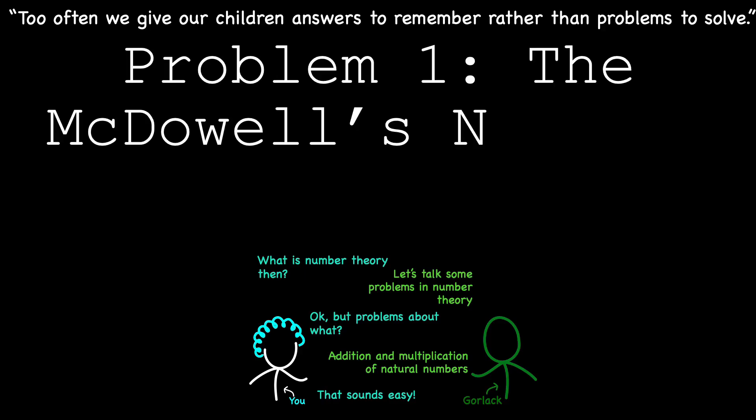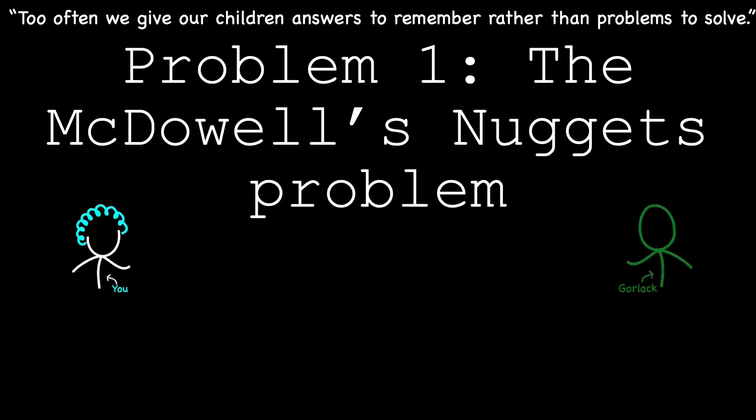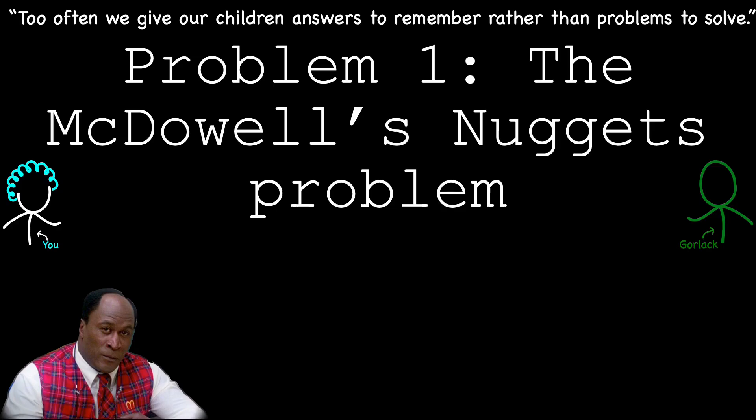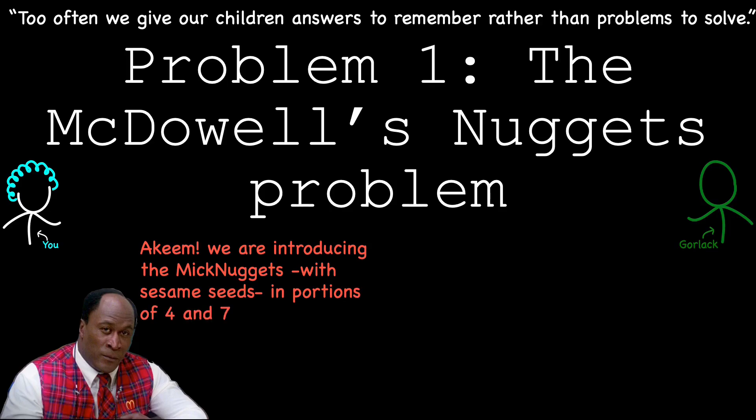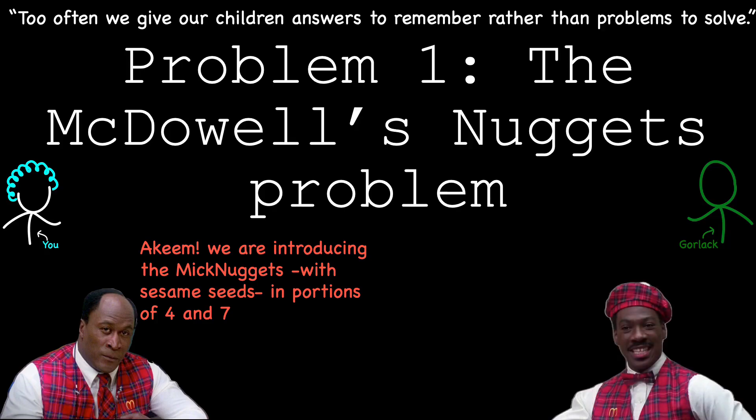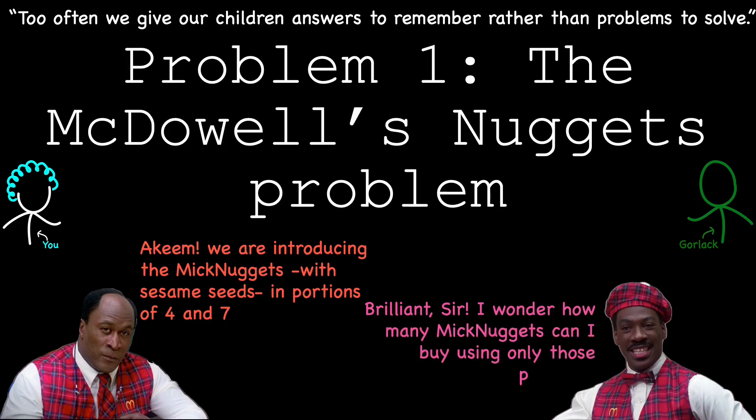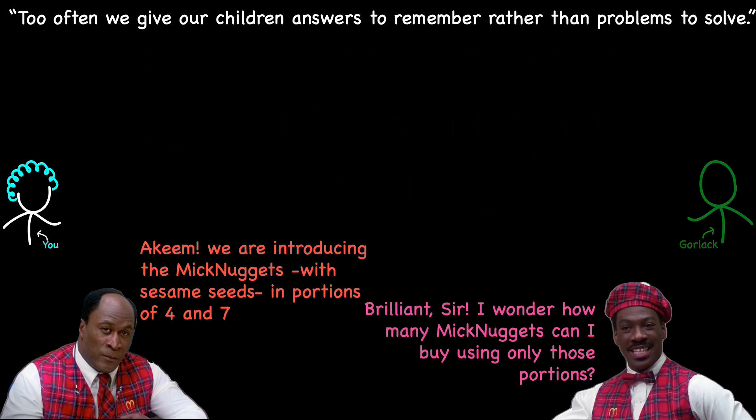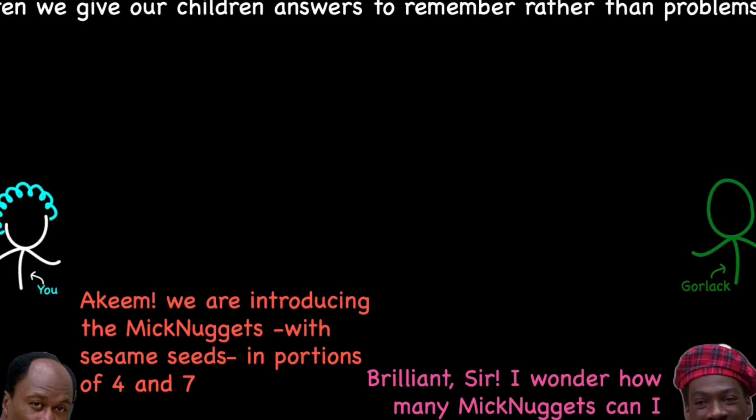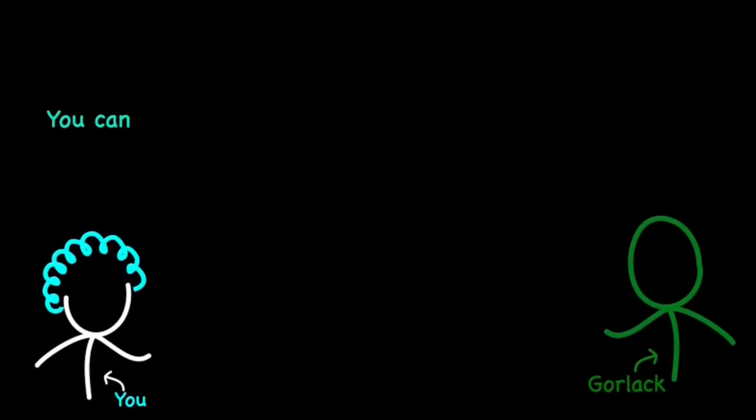Problem 1: The McDonald's nuggets problem. In an effort to revolutionize fast food, Cleo McDowell introduces McNuggets, chicken nuggets with sesame seeds, available in portions of four or seven. Now, here is the question. How many McNuggets can you buy using only these portion sizes? At first, you might play around with some combinations to figure out which totals are possible. But if the math bug has bitten you, you won't stop there.